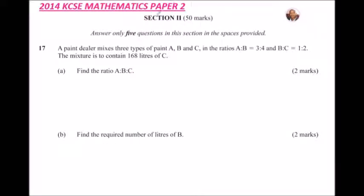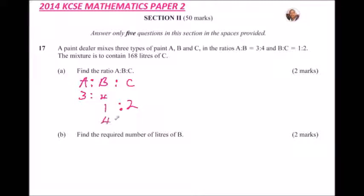Let's start with part A: find the ratio of A:B:C. We write the ratio of A:B which is 3:4, and the ratio of B:C which is 1:2. Because B is common, we get the LCM of 4 and 1, which is 4. We multiplied 1 by 4 to get 4, so we also multiply 2 by 4 to get 8. The ratio of A:B remains 3:4, so the ratio of A:B:C is 3:4:8.